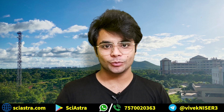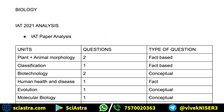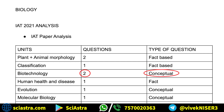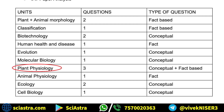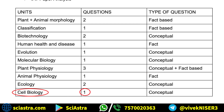Now let's look at the analysis of IAT 2021. As you can see here, plant and animal morphology — two questions were asked, fact-based. Classification — one question, fact-based. Biotechnology — two questions, conceptual. Human health and disease — one question, fact-based. Evolution — one question, conceptual. Molecular biology — one question, conceptual. Plant physiology — three questions, both conceptual and fact-based. Animal physiology — one question, fact-based. Ecology — two questions, conceptual. Cell biology — one question, conceptual.